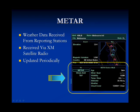Shown here is the METAR page. The METAR information is taken from weather reporting stations throughout the United States and is received via XM satellite radio from a satellite receiver located in the airplane. Weather reports are updated approximately every 45 minutes while reports are sent approximately every 15 minutes through the satellite. The displayed METAR data includes the age of the METAR report, local winds or gusts, local visibility, temperature dew point, altimeter, any local weather phenomenon, and cloud cover.